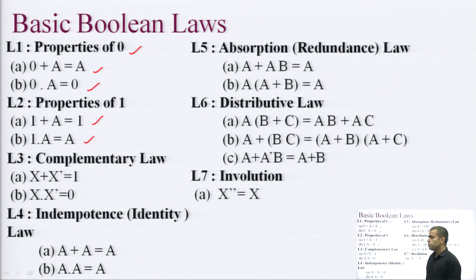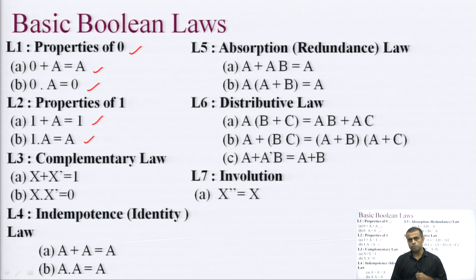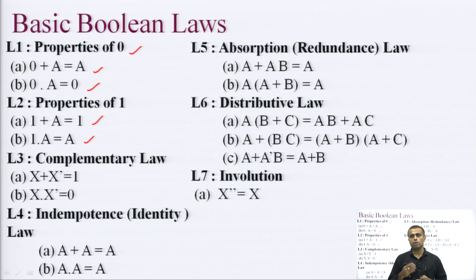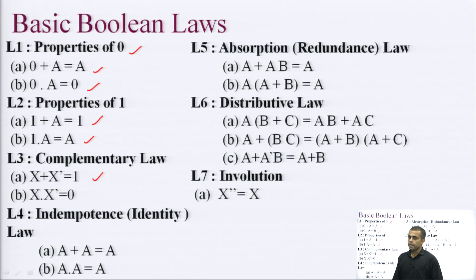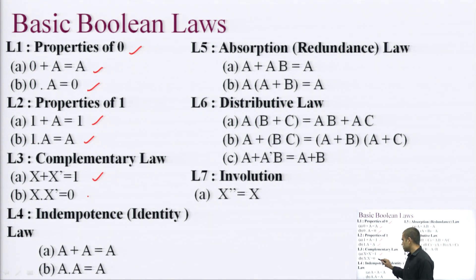The complementary law says if a variable is added to its complement, x plus x-bar equals 1. This is because if x is 0 then x-bar is 1, and if x is 1 then x-bar is 0, so in either case it becomes 0 plus 1 or 1 plus 0, giving output 1. Similarly, x into x-bar equals 0, because it is either 0 into 1 or 1 into 0, so in both cases the output is 0.